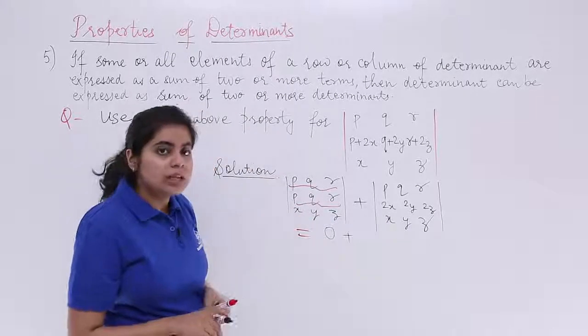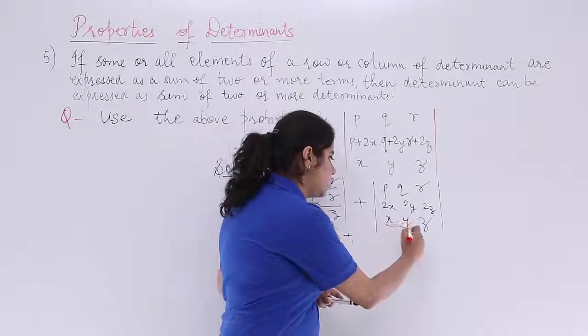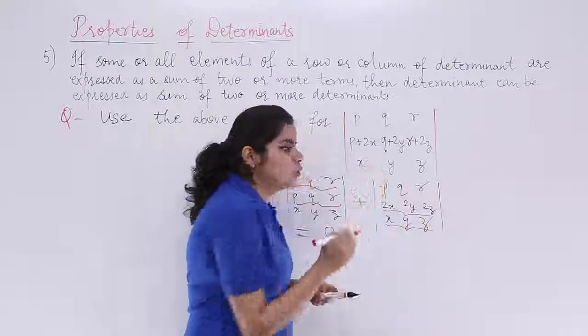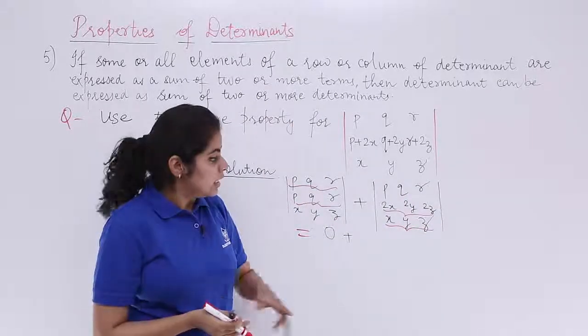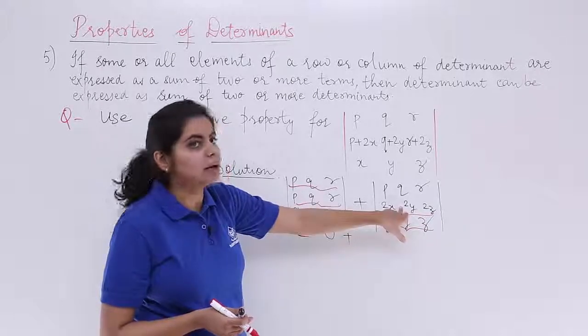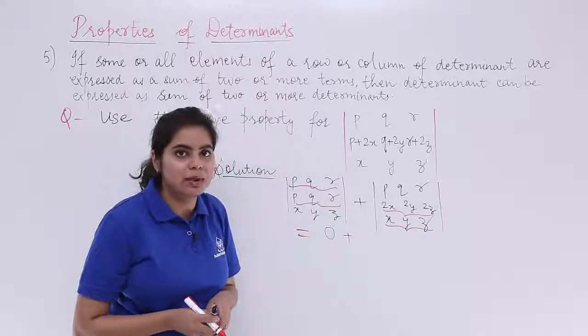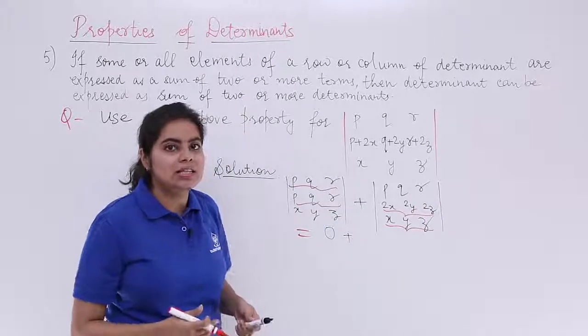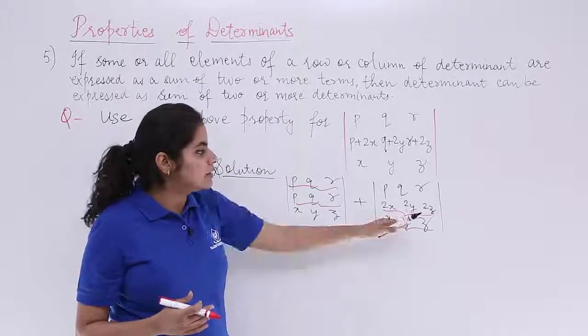So what is the case here? The case is that the third row and the second row have proportional elements. This is X, this is X multiplied by 2. This is Y, this is Y multiplied by 2. This is Z, this is Z multiplied by 2. So even in this case, what will be the answer? The answer will be zero.